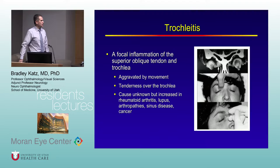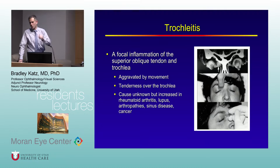Trochleitis is inflammation of the superior oblique tendon where it passes through the trochlea, and it can be diagnosed by palpating over the trochlea. It's more common in patients with certain connective tissue diseases.